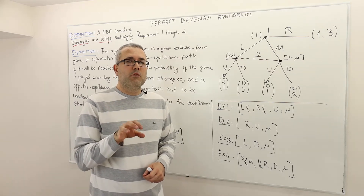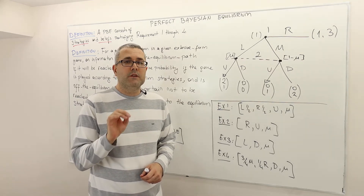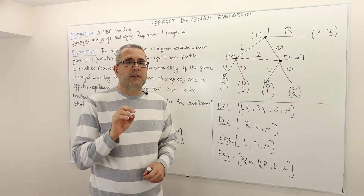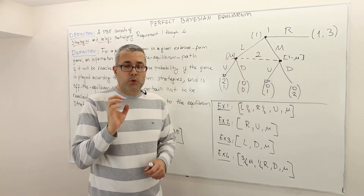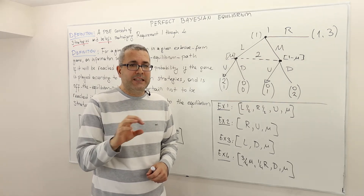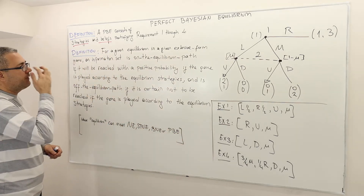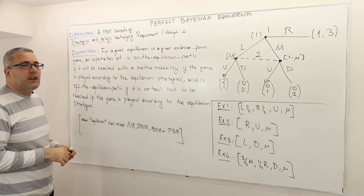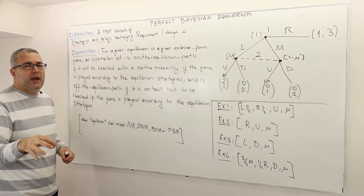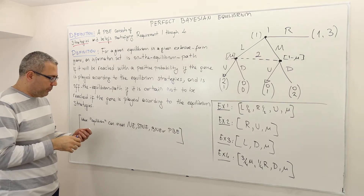Before going to requirement 3, there is an important definition — an important notion that we should clear out. Here is the definition: the concept of on the equilibrium path and off the equilibrium path.